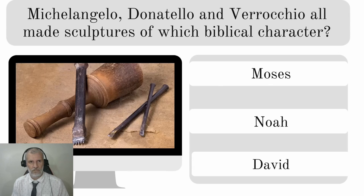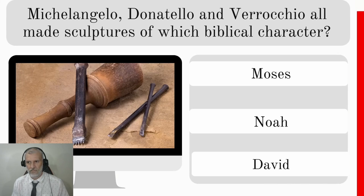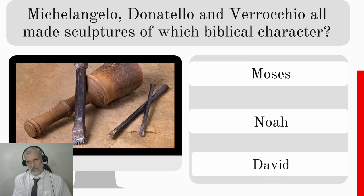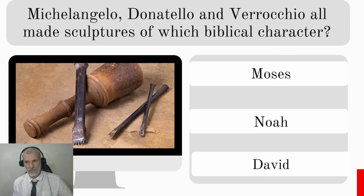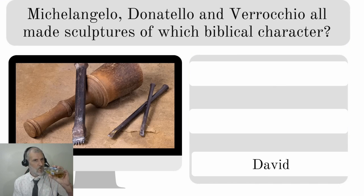Michelangelo, Donatello, and Verrocchio all made sculptures of which biblical character — Moses, Noah, or David? David. The Michelangelo one is particularly famous. The answer is David.